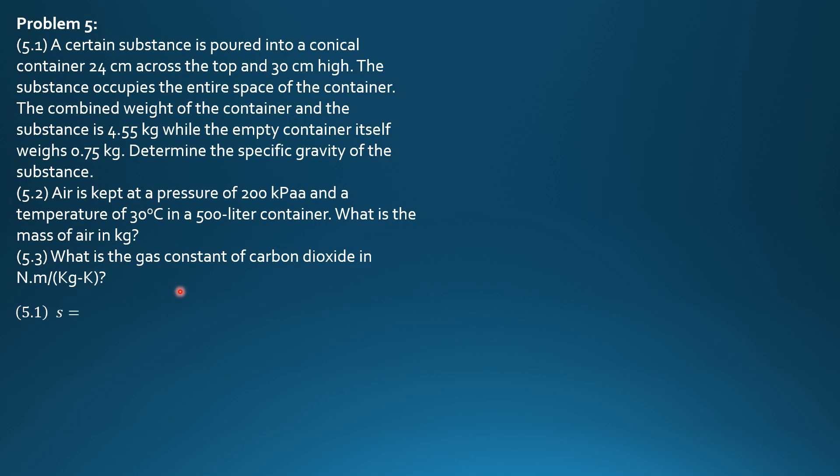Specific gravity is density of substance divided by density of water which is 1,000 kg per cubic meter. Density of substance is mass over volume.